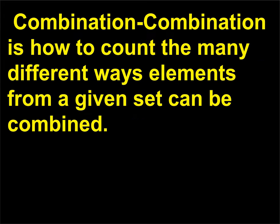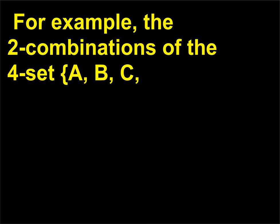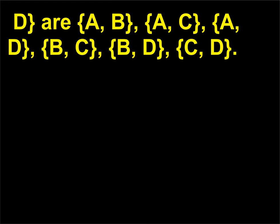Combination is how to count the many different ways elements from a given set can be combined. For example, the two-element combinations of the four-element set {A, B, C, D} are: AB, AC, AD, BC, BD, CD.